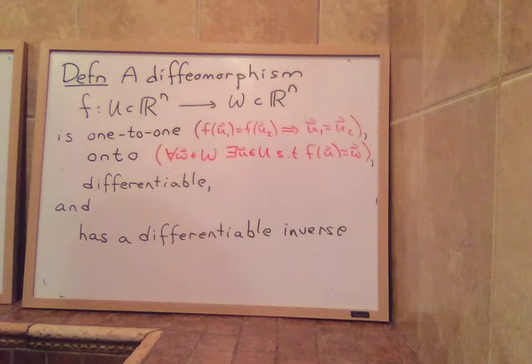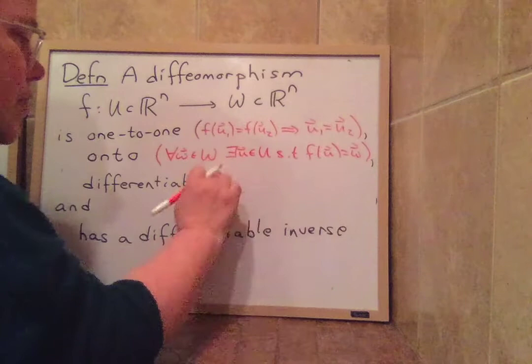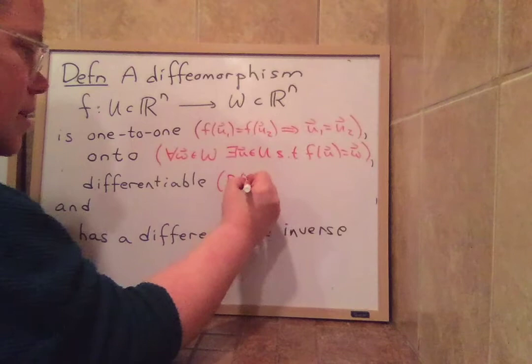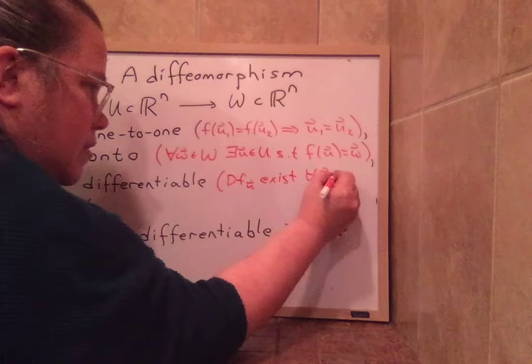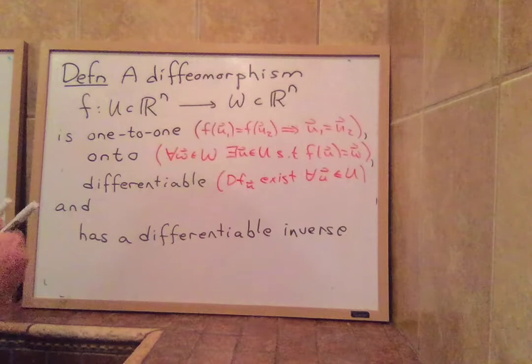Differentiable, we just talked about, that was that there was a df. And what we're really going to require is that df at u exists for all u in the domain. So it has to be differentiable at every single point in the domain.